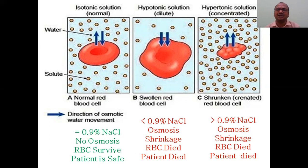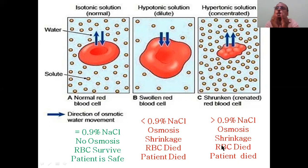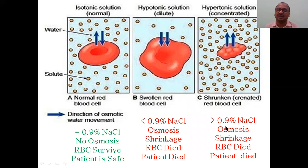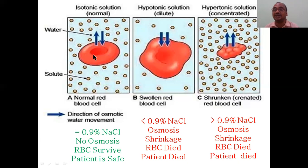If you are using a concentration greater than 0.9% NaCl, this is a hypertonic scenario. The water present inside the RBC comes out to dilute the outside NaCl solution, causing shrinkage of the RBC. Finally the patient dies. So: hypertonic means greater than 0.9%, hypotonic means less than 0.9%. Many students confuse this. Iso means equal tonicity — isotonicity. Hypo means less, hyper means greater — that's how you remember it.